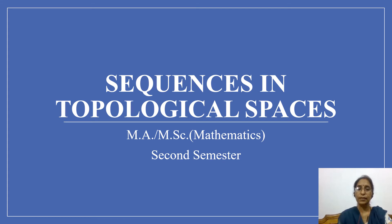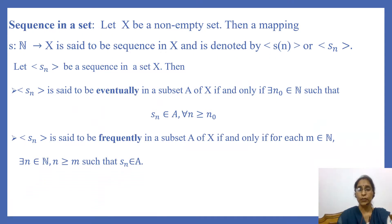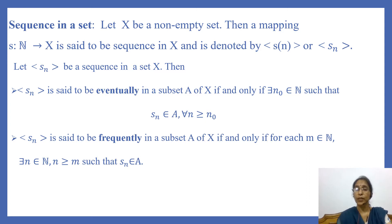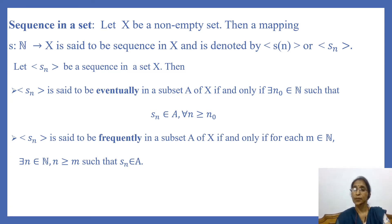Today I will discuss sequences in topological spaces. You all know about real sequences; today I am going to introduce you to sequences in any set. Let X be a non-empty set. Then the mapping S from the set of natural numbers N to X is said to be a sequence in X, and is denoted by the image of each natural number under S — that is, S(n), or for convenience, S_n.